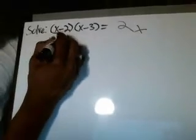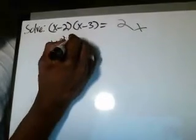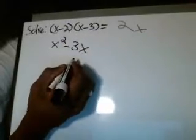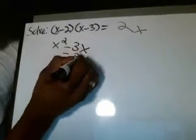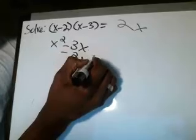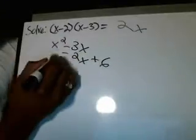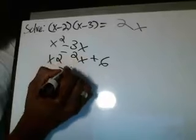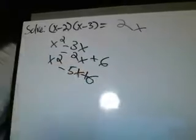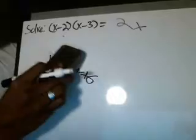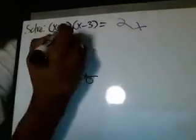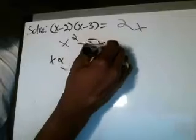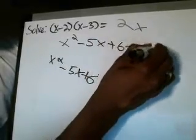x times x is x squared, x times negative 3 is negative 3x, negative 2 times x is negative 2x, and negative 2 times negative 3 is positive 6. So this gives you x squared minus 5x plus 6, let's write that up here: x squared minus 5x plus 6 is equal to 2x.